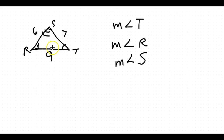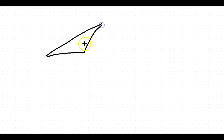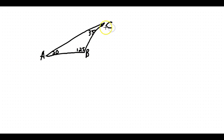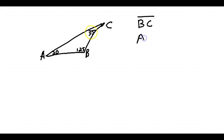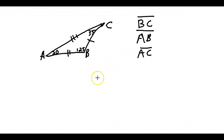So the order is T, then R, then S. In example 2 we have a triangle with angles 20 degrees, 125 degrees, and 35 degrees, and sides AB, BC, and AC. The shortest side is BC because we have the smallest angle — 20 degrees — opposite it. The next shortest is AB because the next angle up is 35 degrees, and finally the longest side is AC, opposite the largest angle of 125 degrees.